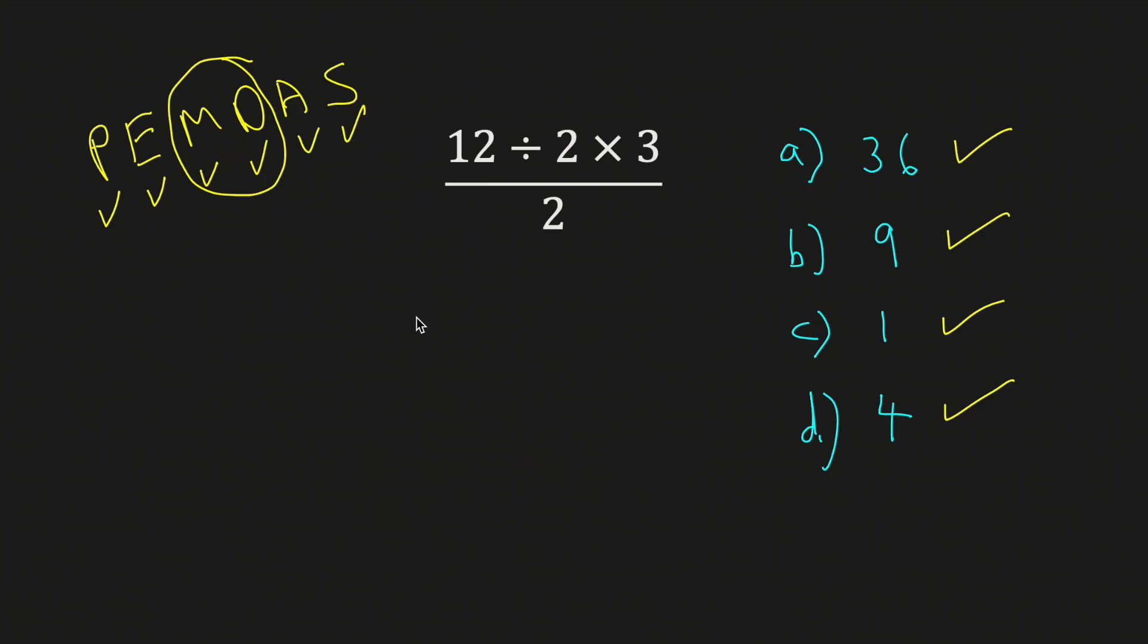So then the correct way to do this problem is first take 12 divided by 2 and rewrite. So we get 6 times 3 divided by 2, which gives us 18 divided by 2, which gives us 9. And that's the right answer. And thanks for watching.